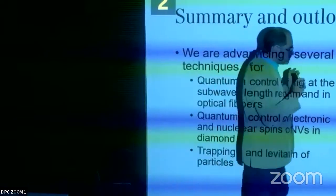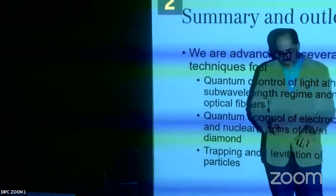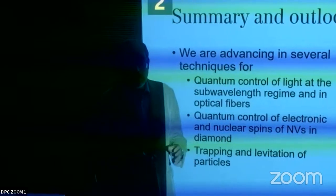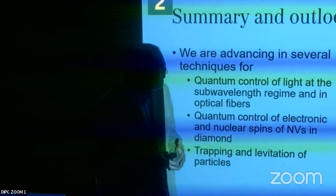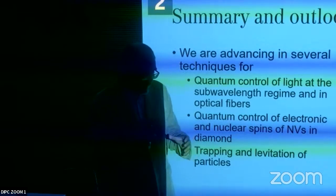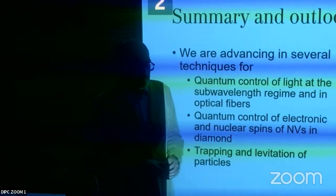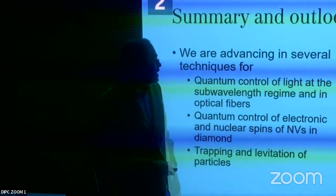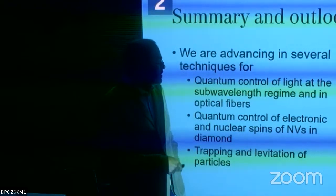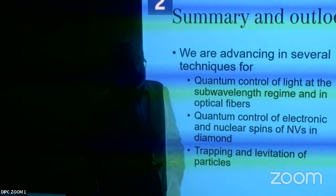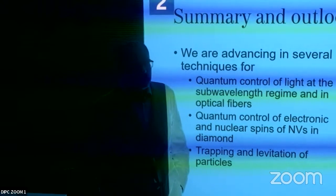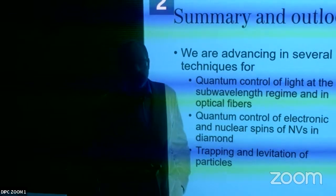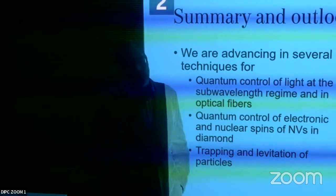The end goal is to combine all these techniques on a single platform: use quantum sensors and charged particles in optical traps — now feasible because we can trap particles with very low light. We want to rotate particles at high speeds, and use entangled photons and squeezed light to measure those rotational speeds with great accuracy.